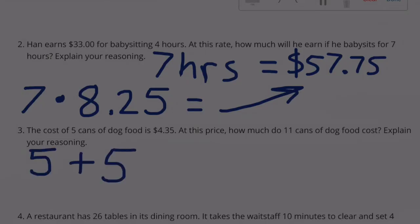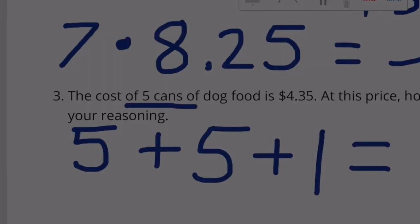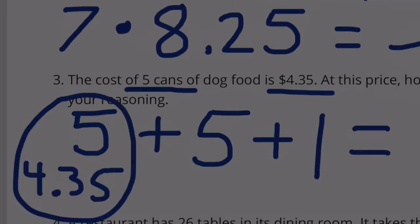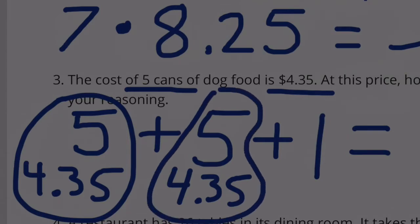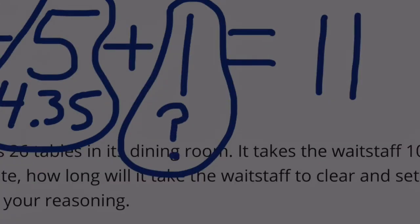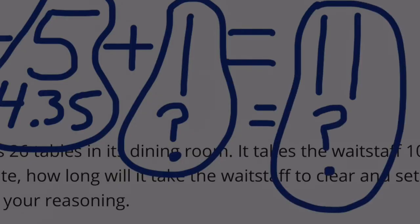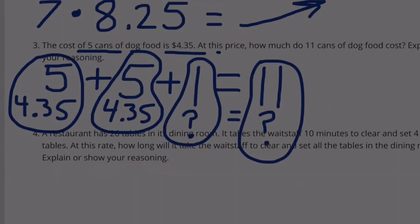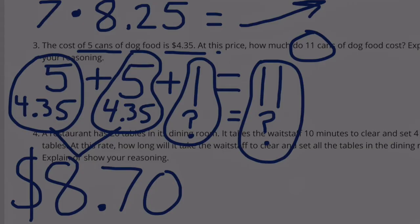5 cans plus 5 cans plus 1 more can is going to equal 11 cans. So if 5 cans of dog food cost $4.35, we have 5 cans for $4.35 plus another 5 cans at $4.35 plus however much 1 can costs. I'm actually going to add these together. I'm going to get $8.70. That's how much it would be for 10 cans.